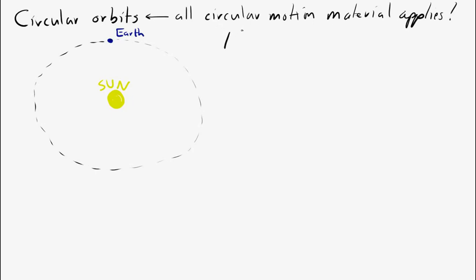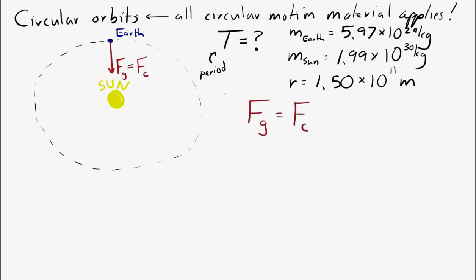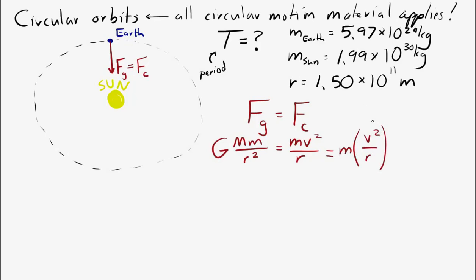I'll give you the mass of the earth, the mass of the sun, and the distance between the earth and the sun. The gravitational force on the earth as it travels in that circular path is the centripetal force. We can write centripetal force as mv squared over r, but there's a more useful form: v squared over r is the centripetal acceleration, and we have an equation incorporating the period. So I'll make that substitution.